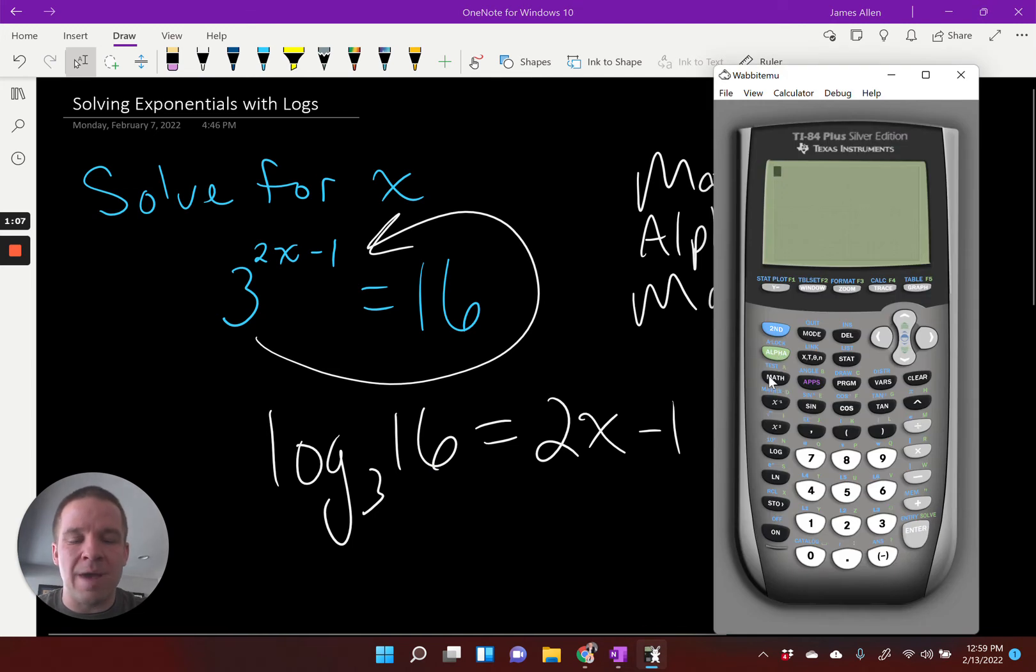Math right there, then the green alpha, then math, a nice little log with an open base, and then an argument will pop up for you. Now, I don't have that functionality on this one, so I have to do what's called change of base.